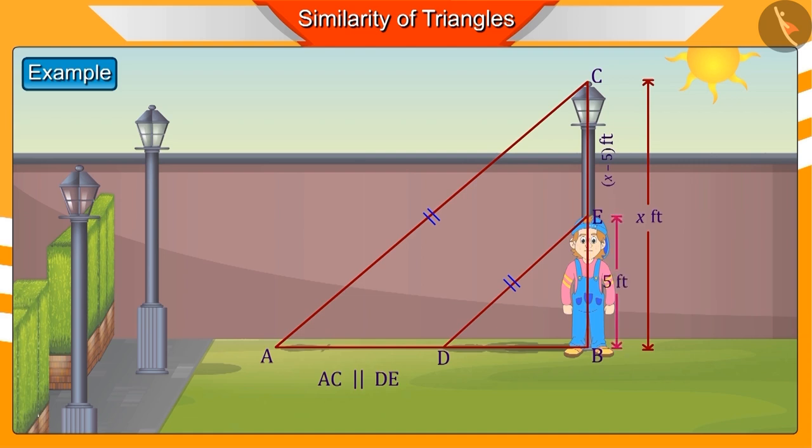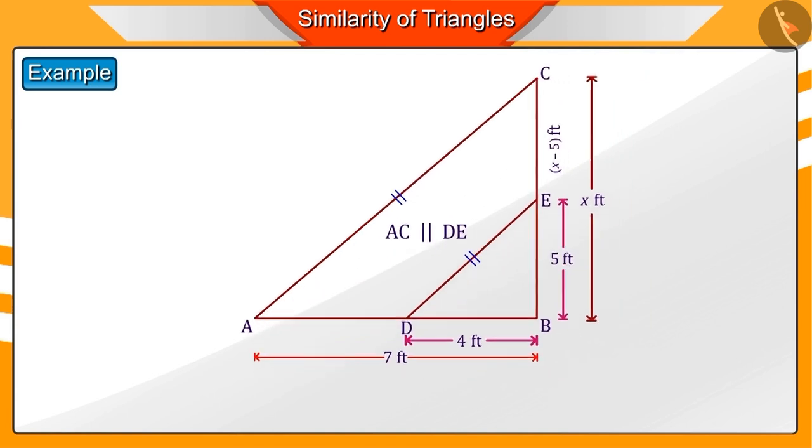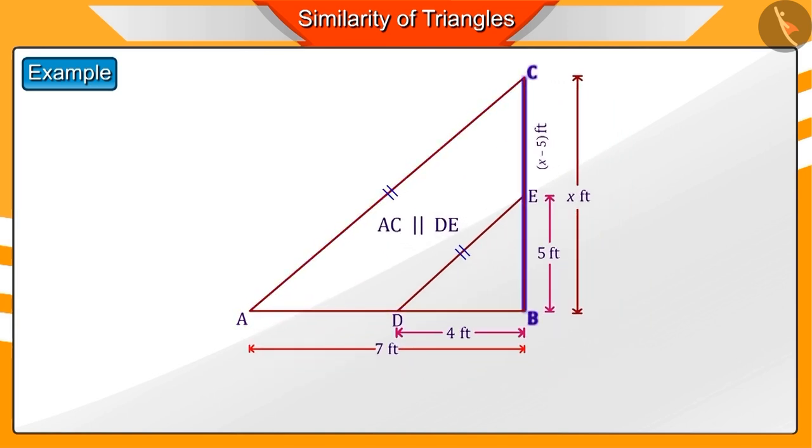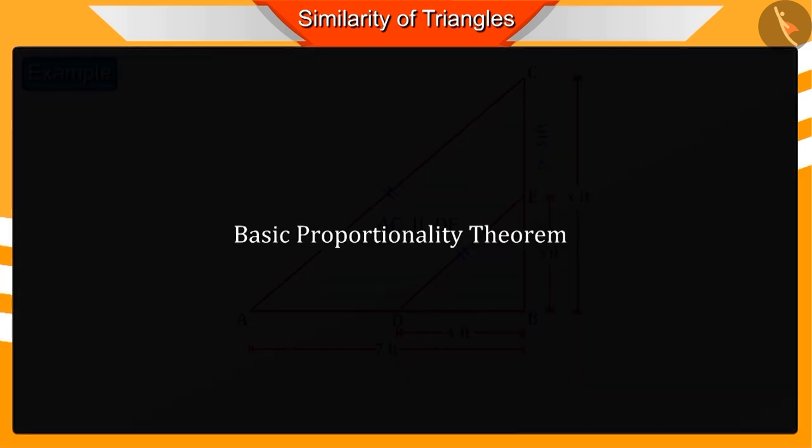BE is the height of Nakul, BC is the height of the pole, DB is the shadow of Nakul, and AB is the shadow of the pole. Looking at this picture, we can say that line DE intersects the sides AB and BC of the triangle ABC at points D and E respectively, which is parallel to the third side AC of triangle ABC. Can you find the value of x?